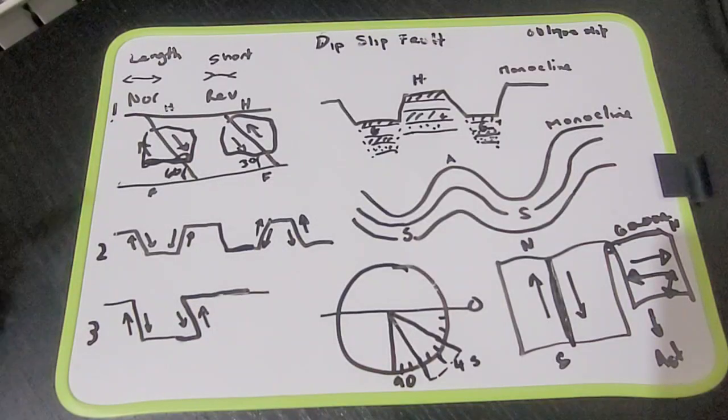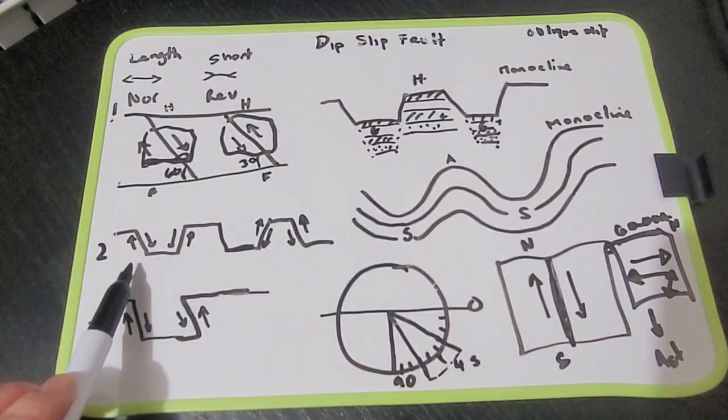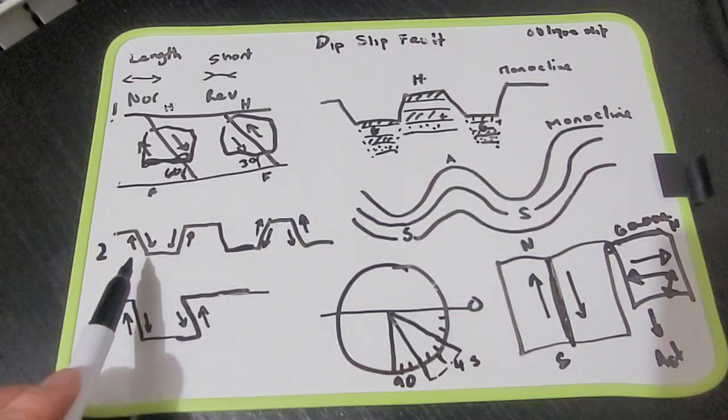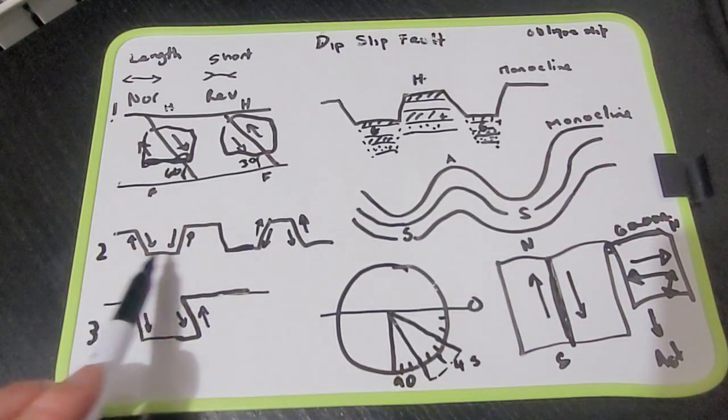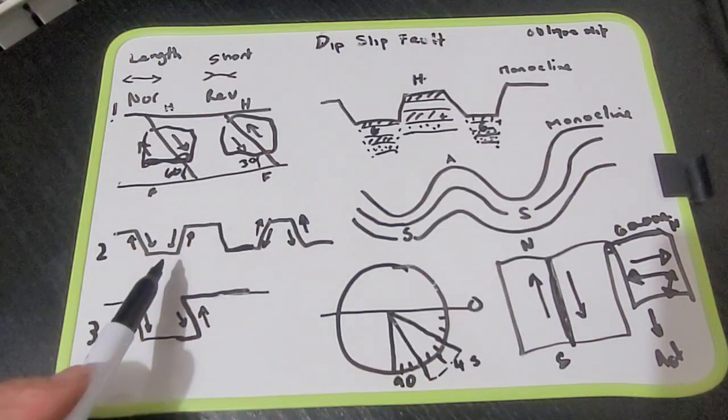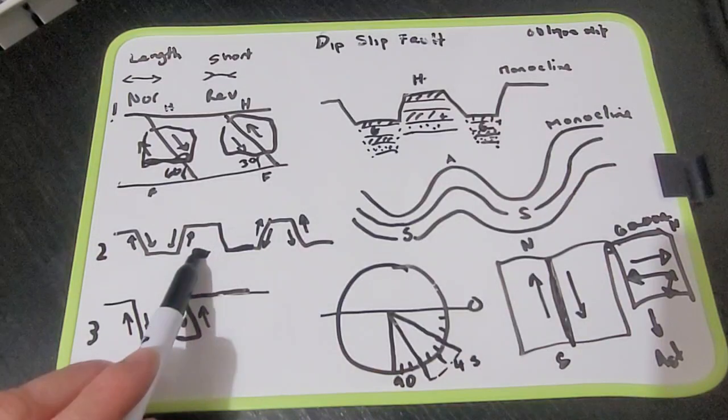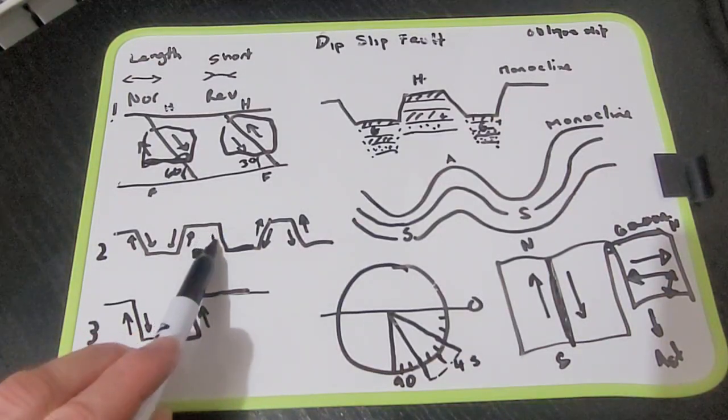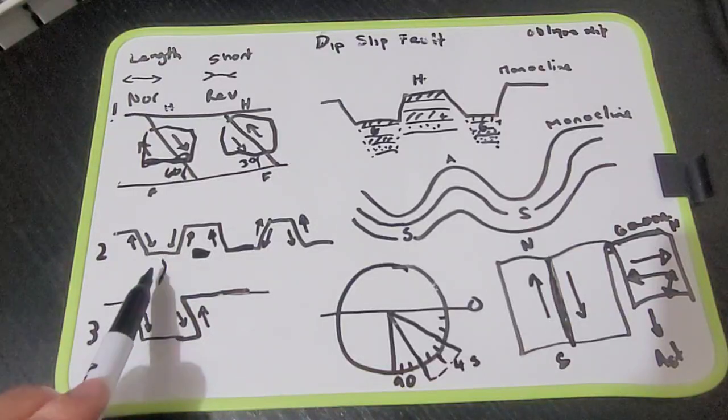So if we look at the second graph, this is a side-on of a normal fault and this is how grubens and horst form. So we have this section here which is rising relative to the actual valleys which are sinking.